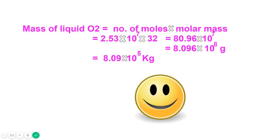To convert moles of oxygen to mass, multiply moles by molar mass. Molar mass of O₂ is 32 g/mol: 2.5 × 10⁷ × 32 = 80.96 × 10⁷ g. In scientific notation this becomes 8.096 × 10⁸ g. Converting grams to kg by dividing by 10³ gives 8.09 × 10⁵ kg. So the mass of liquid oxygen required is 8.09 × 10⁵ kg.